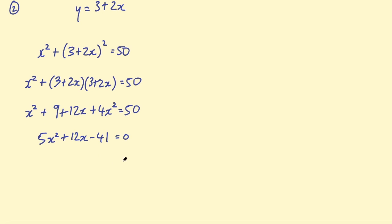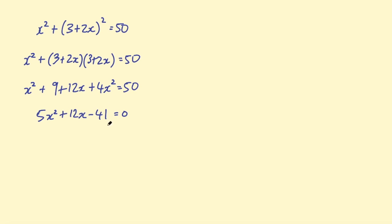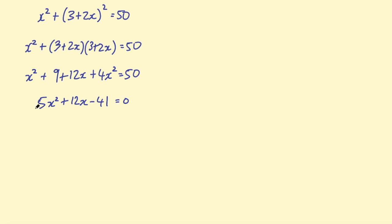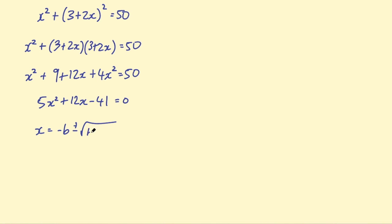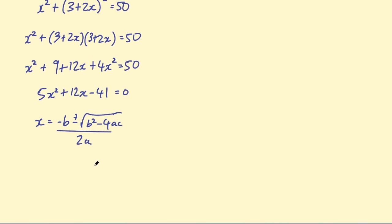This is another quadratic we can't factorize — there are no factors of 41 that multiply with the factors of 5 to make 12. So we're going to have to use the quadratic formula again: x equals minus b plus or minus the square root of b squared minus 4ac, over 2a. Substitute all those values in and have a go.